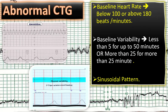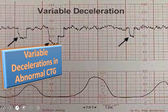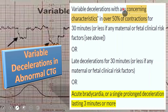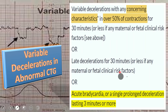Regarding variable decelerations in abnormal CTG: variable deceleration with any concerning characteristics in over 50% of contractions for 30 minutes, or less if any maternal or fetal clinical risk factors are present. Or late deceleration for 30 minutes, or less if any maternal or fetal clinical risk factors. Or acute bradycardia or a single prolonged deceleration lasting 3 minutes or more. All these are abnormal features on CTG.